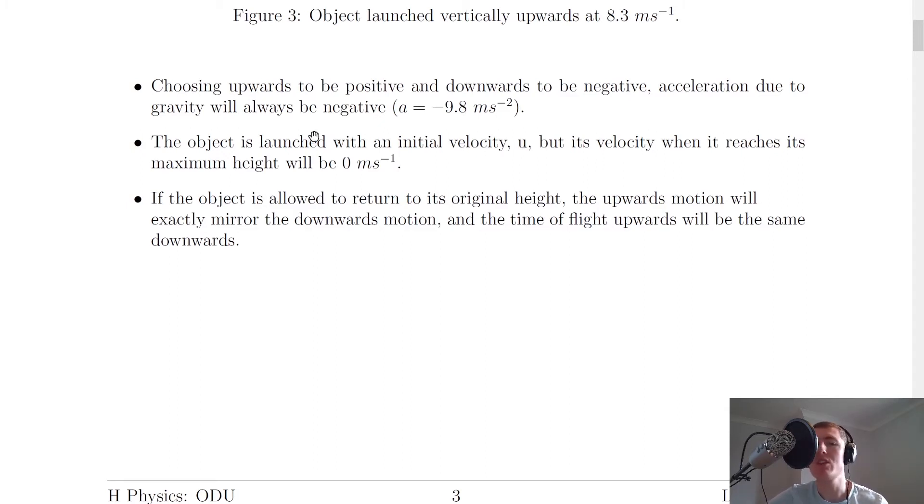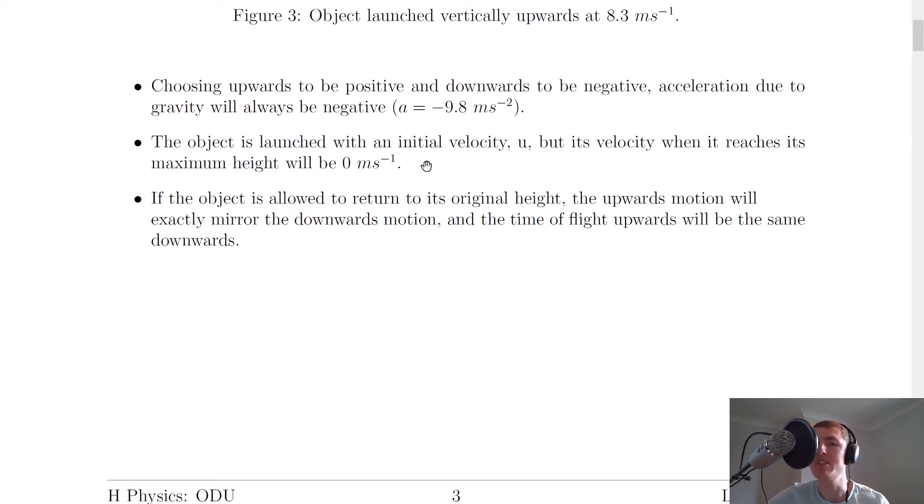It's also the case that the object will be launched with an initial velocity u that is non-zero, but its velocity when it reaches its maximum height will be 0 meters per second. If we look at the picture the initial vertical velocity u will be 8.3 meters per second because it's always got to be non-zero for an object launched vertically upwards. And then at the highest point in its motion before it starts traveling back down, it's going to have reached 0 meters per second.